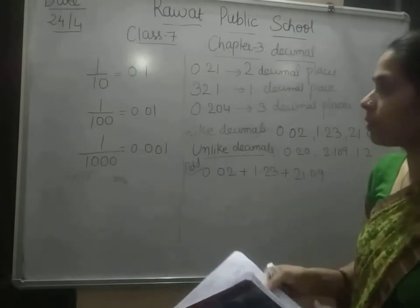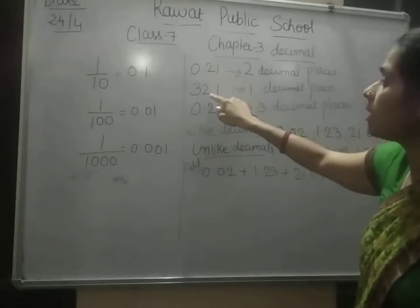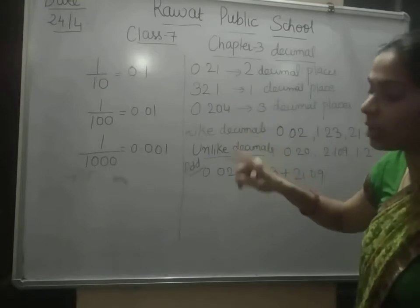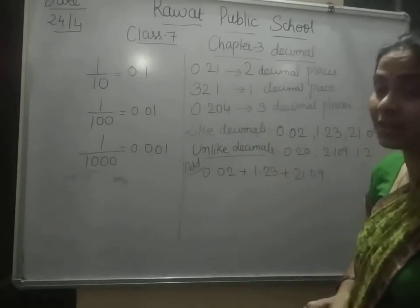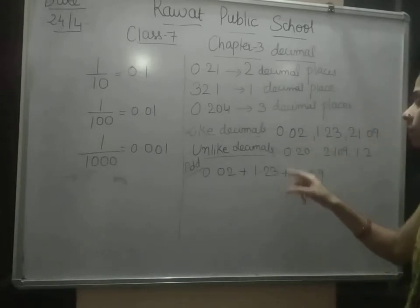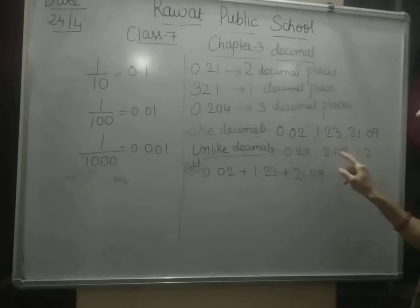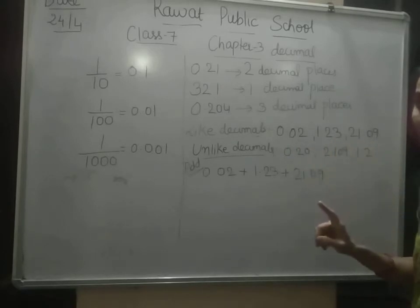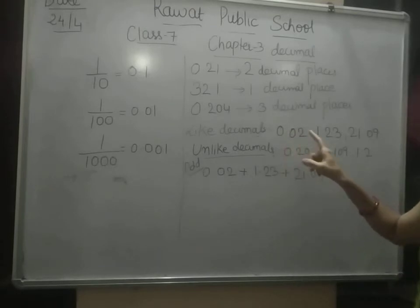So the decimal is before 3 numbers. Here the decimal is before 2 numbers, and here the decimal is before 1 number. Now there is a term called 'like decimals.' What are like decimals? I have taken some examples: 0.02, 1.23, 21.09. Here one thing is common in all — the decimal is before 2 places.